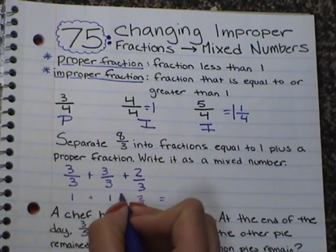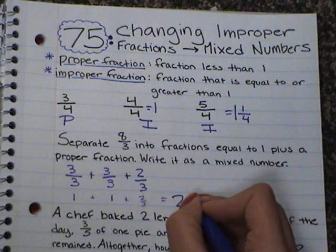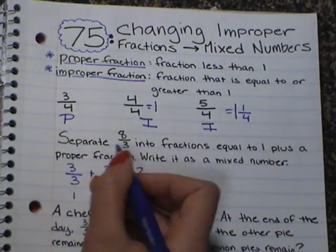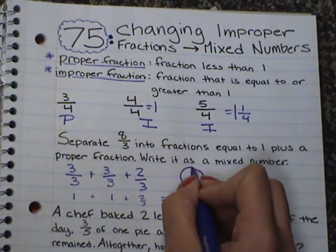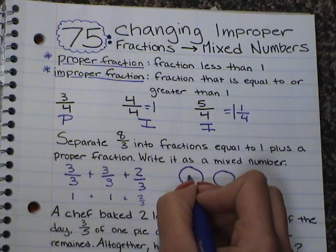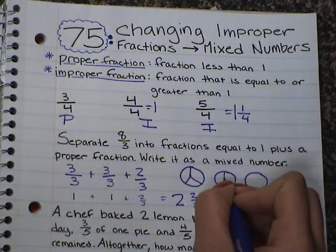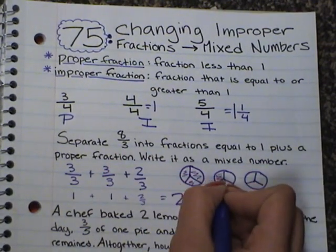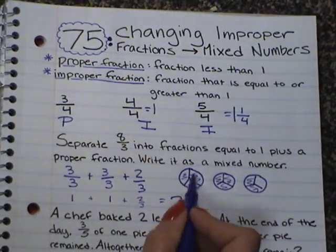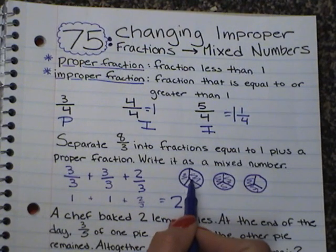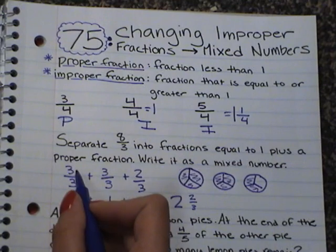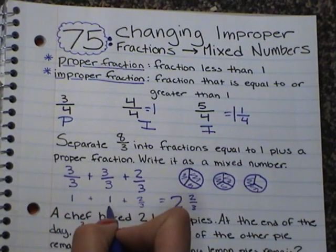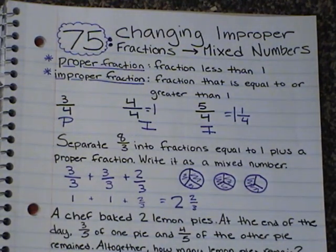When I add this together, I have 1 plus 1 equals 2 as my whole number, and 2 thirds as my fraction. So the mixed number is 2 and 2 thirds. Another way you could do it is draw a picture — 3 circles each with 3 pieces, and count out 8 thirds: 1, 2, 3, 4, 5, 6, 7, 8. That gives you 3 thirds plus 3 thirds plus 2 thirds. Each set of 3 thirds is 1 whole, so you get 2 wholes and 2 thirds. If it helps you to draw a picture, do that first until you get the number part easier.